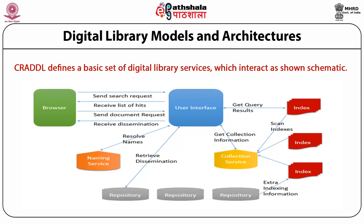The browser sends the search request to the user interface. The user interface queries the index servers and receives the list of hits. Once the list of hits has been passed on to the browser, the browser sends a document request. The user interface gets the dissemination information from the corresponding repository and gives this dissemination to the browser, representing the object to the user.